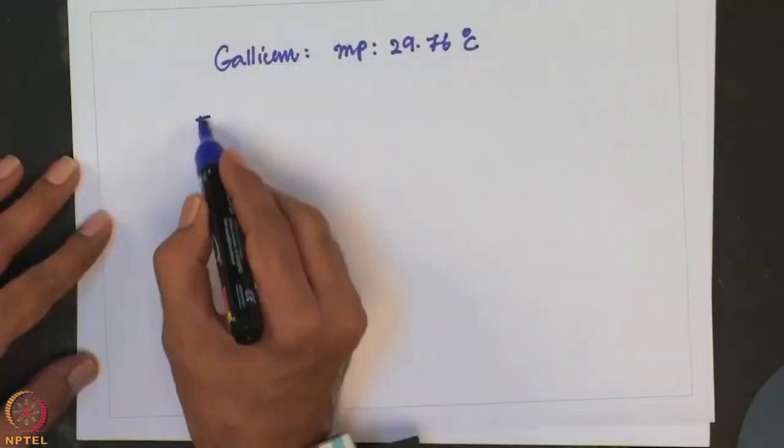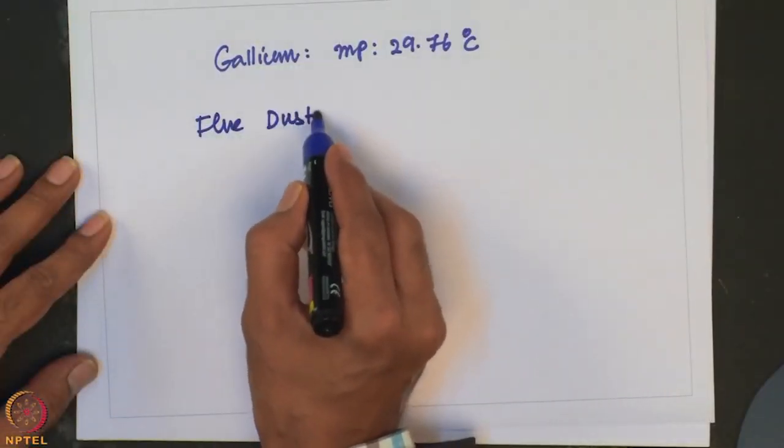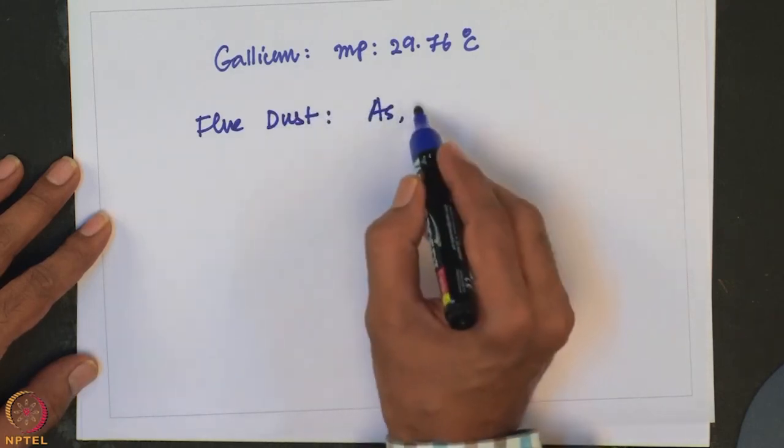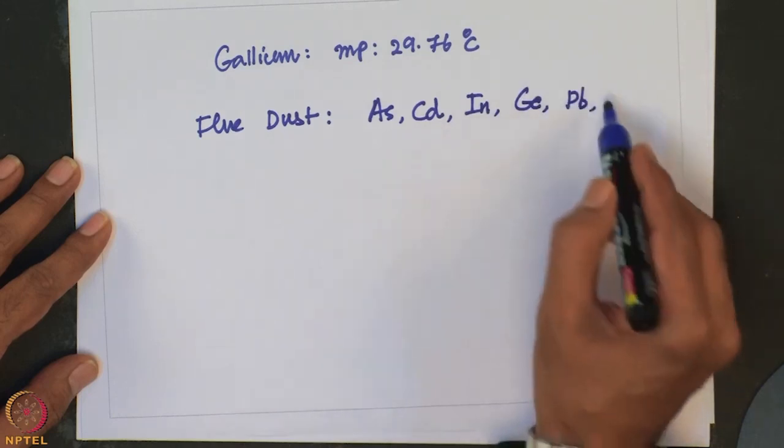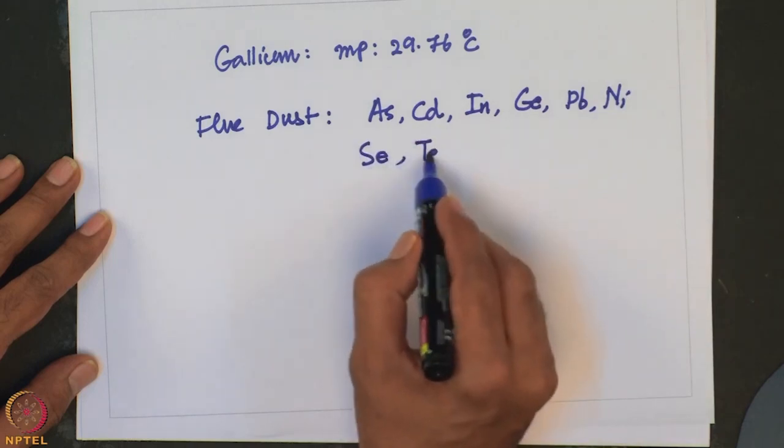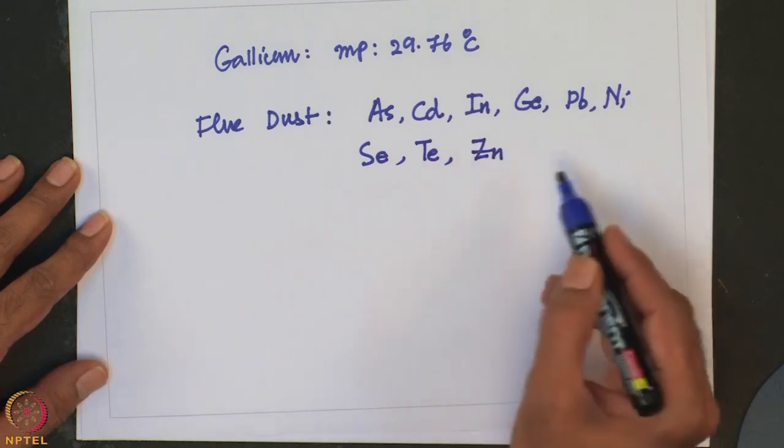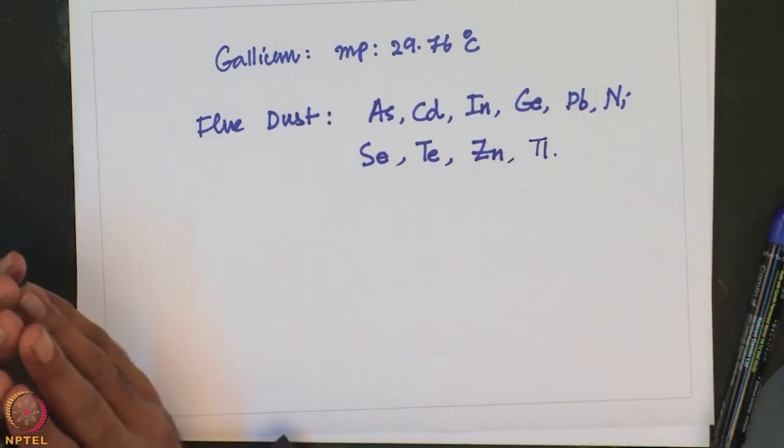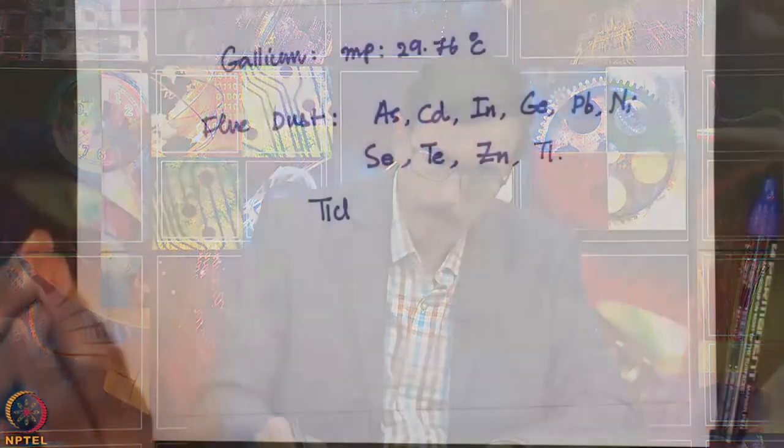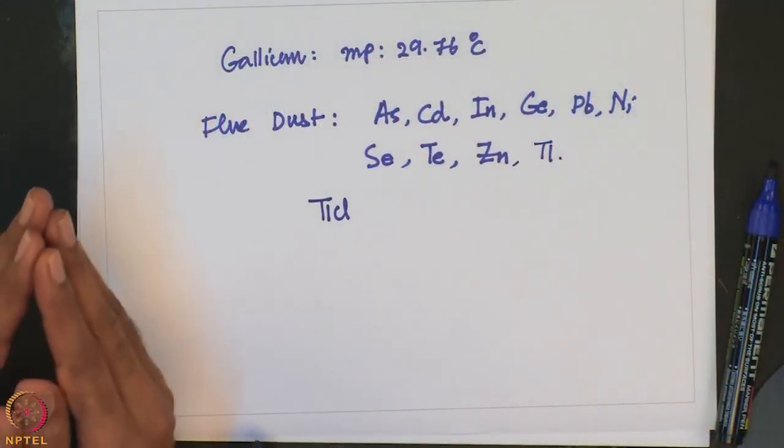Crude thallium is present as a component in flue dust along with arsenic, cadmium, indium, germanium, lead, nickel, selenium, tellurium, zinc. Thallium is also there in it. Thallium is essentially prepared by dissolving flue dust in dilute acid, precipitating out lead sulfate and then adding HCl to precipitate thallium chloride, TlCl. Further purification can be achieved by electrolysis of soluble thallium salts.